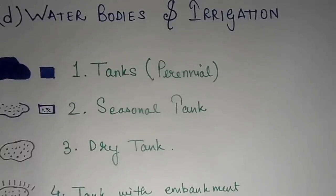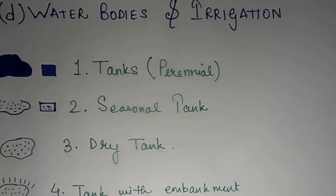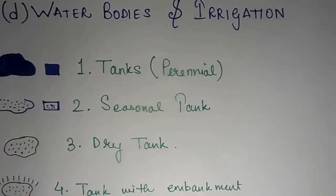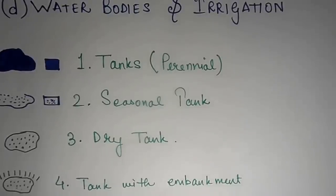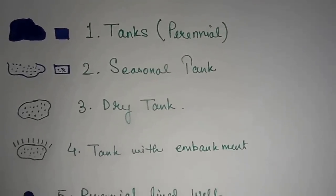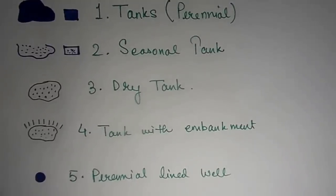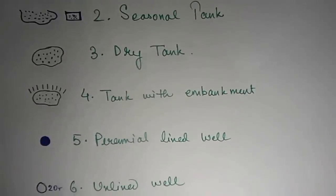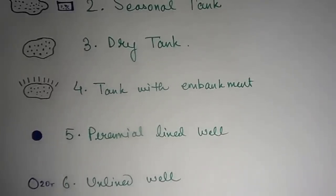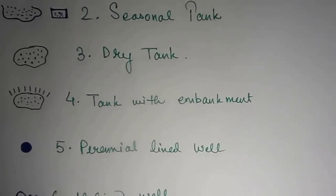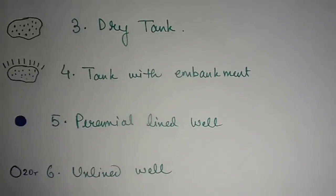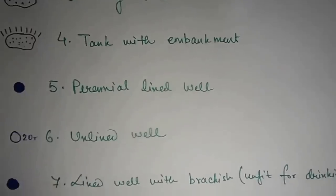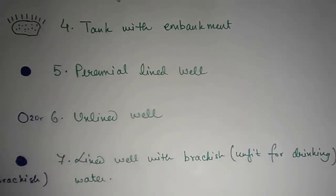Now we have water bodies and irrigation symbols. First we have tanks — a major source of irrigation in places like Rajasthan and Gujarat. A perennial tank means water is present throughout the year. A seasonal tank is represented by a blue line and blue dots, meaning water is present during the rainy season. A dry tank is represented by a black line and black dots, meaning water may be present in the wet season. A tank with an embankment is a human-built tank, while one without embankment is natural. Fifth, we have a perennial lined well — a pakka well lined with bricks and cement with water present throughout the year.